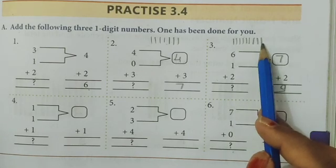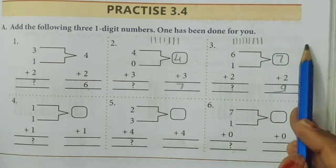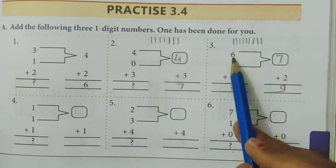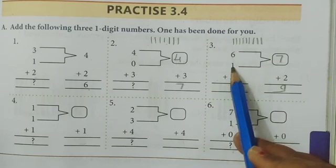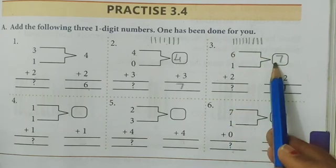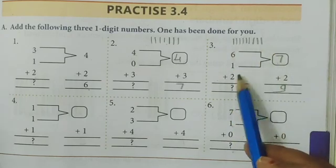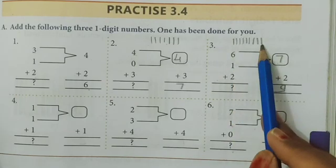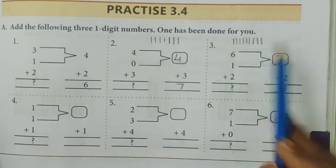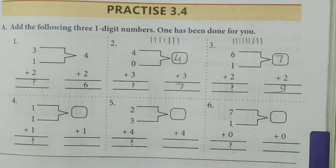You can also use the line method: draw 6 lines, add 1 more and count, then add 2 more lines. You will get the answer.